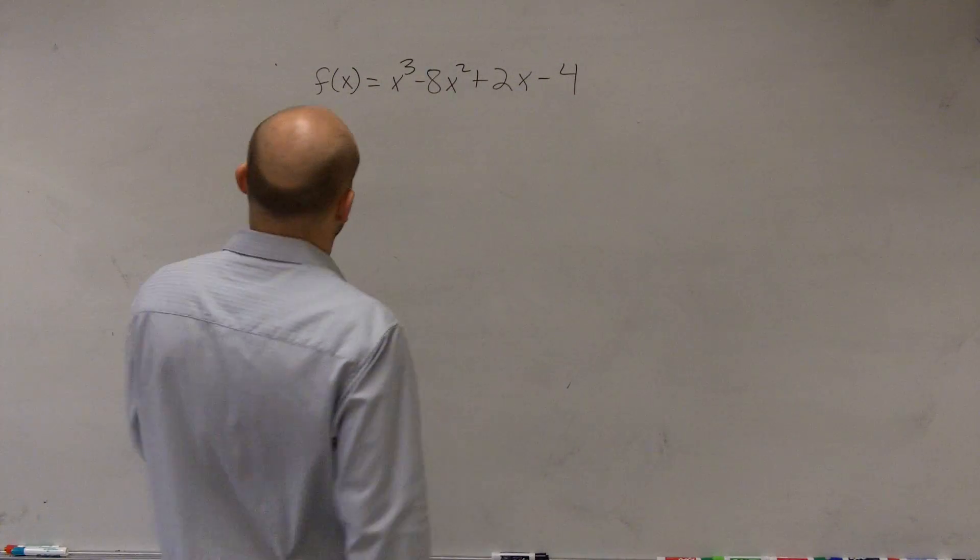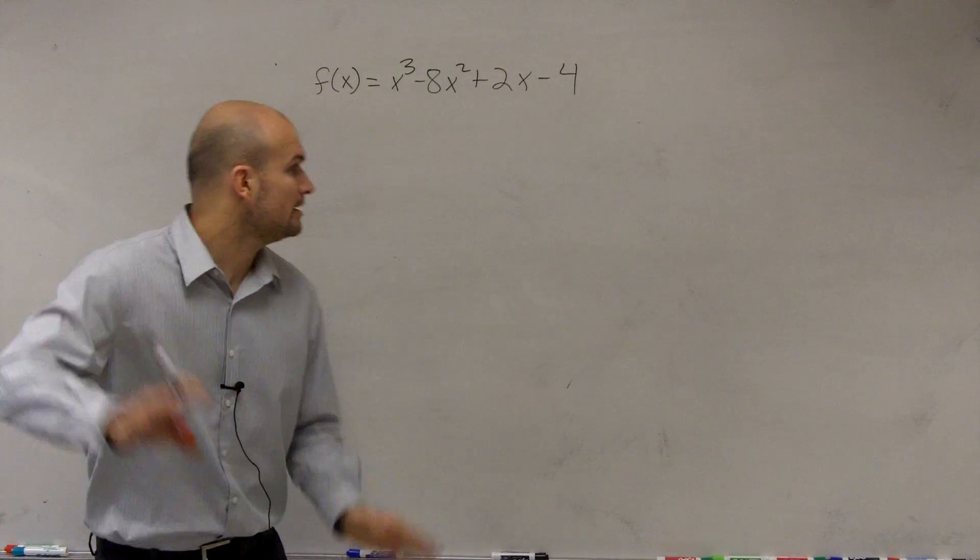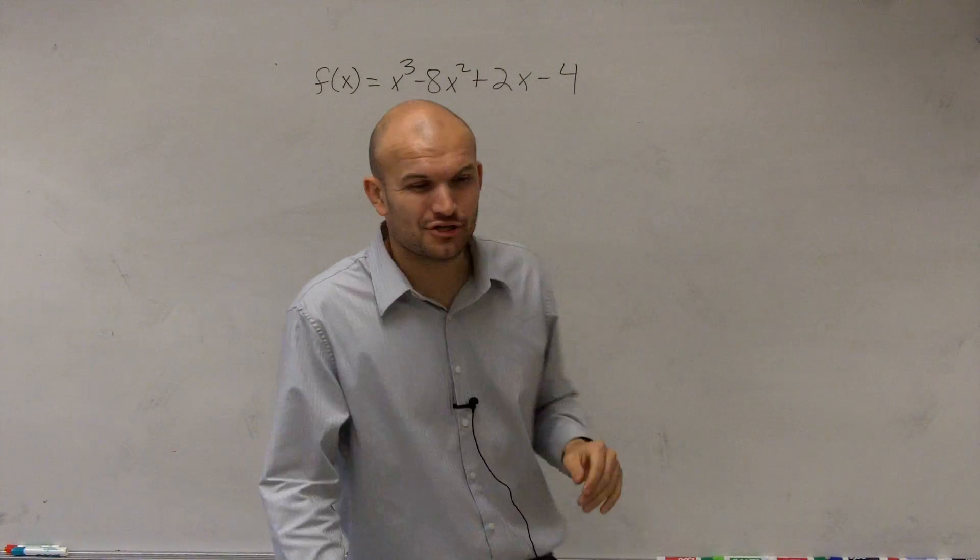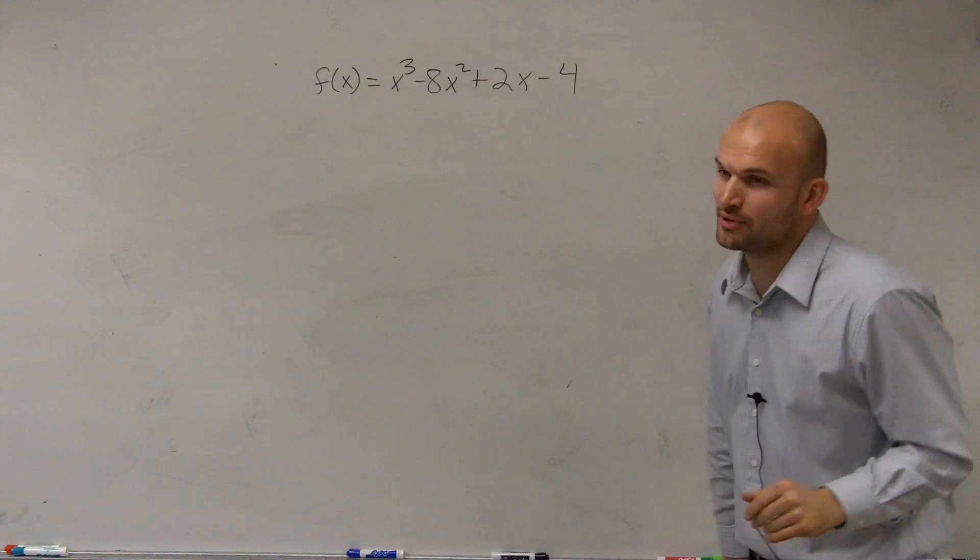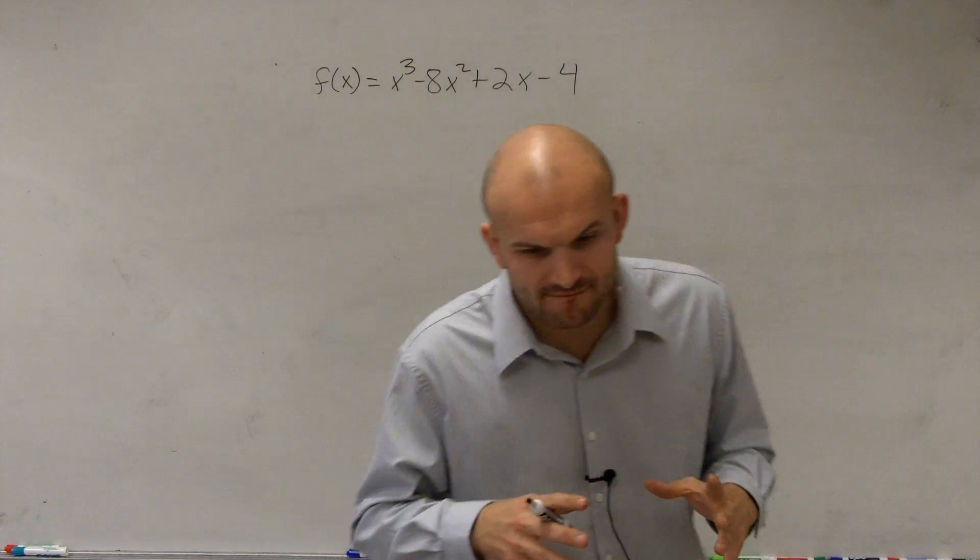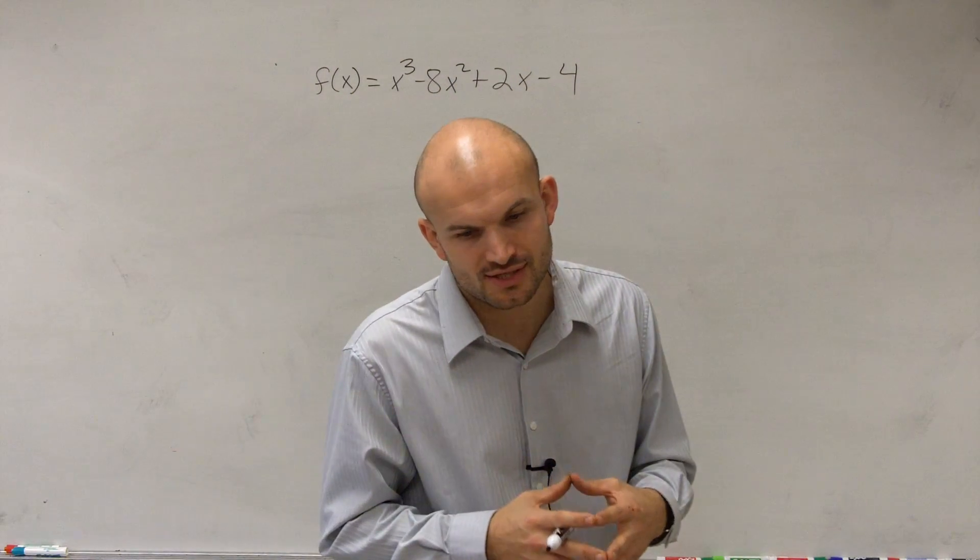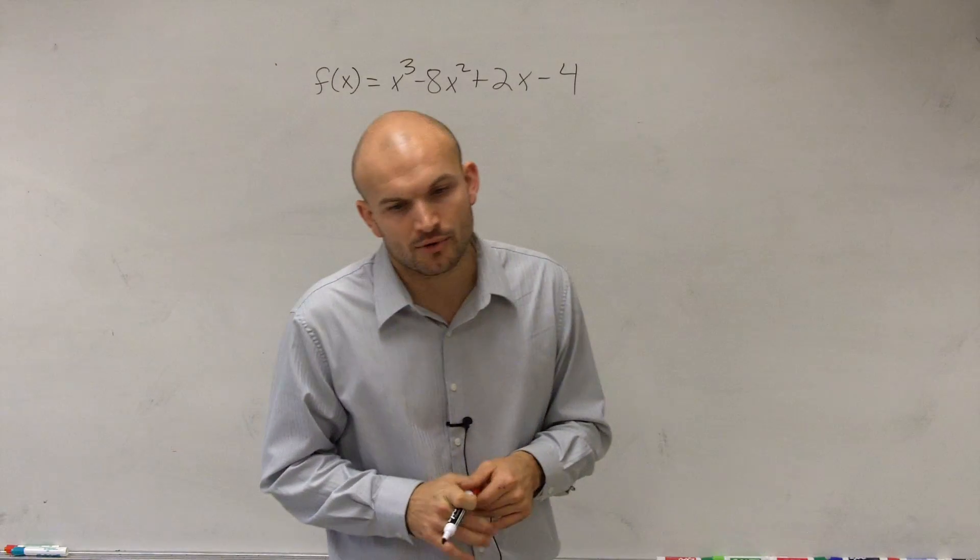OK, so in this example I have f of x. Yes, Ryan, ready? OK. So you have f(x) = x³ - 8x² + 2x - 4. And what they're asking us to do is to state the possible number of positive real zeros, negative real zeros, and imaginary zeros.